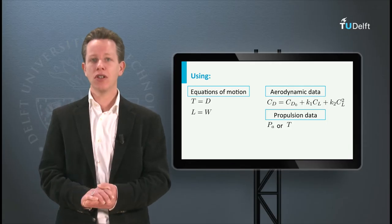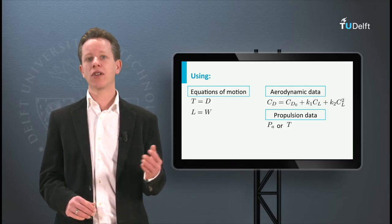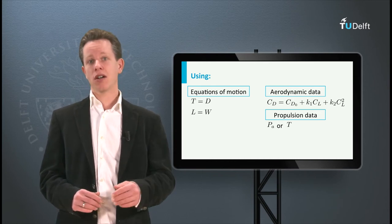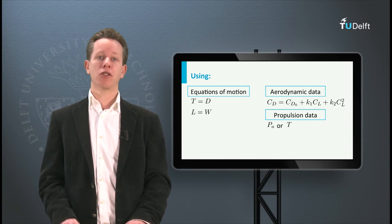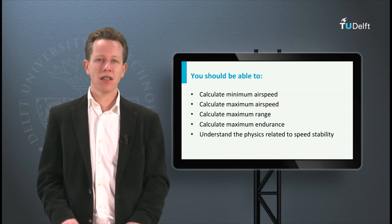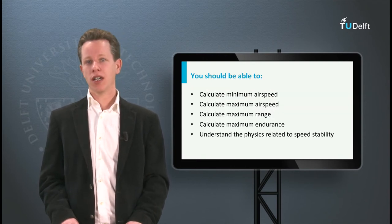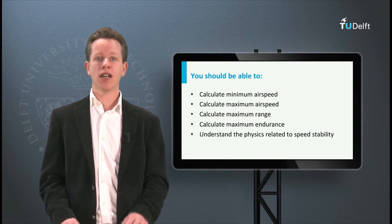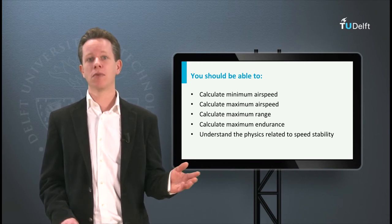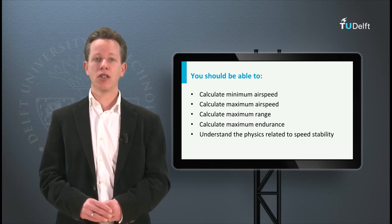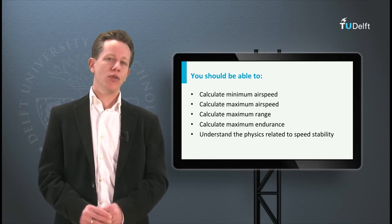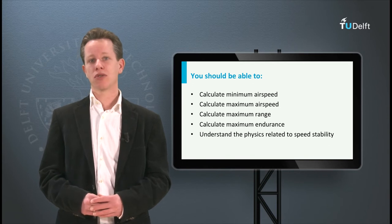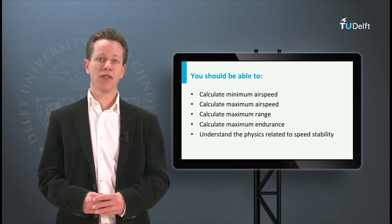In addition, we saw that all aircraft flying quite slow — below the airspeed for minimum drag — are unstable with respect to airspeed. This effect is one that you need to be aware of, and you should be able to understand why all aircraft have this speed stability problem based on the general equations of motion. You do not have to be able to perform calculations related to these speed stability characteristics.